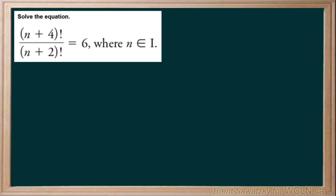So which is the bigger out of these two factorials? Well, the n plus 4. It's definitely going to be bigger than n plus 2. So if we break down the n plus 4 a bit, maybe we can match it up with the n plus 2 factorial on the bottom and see if we can cancel. So let's give that a try.